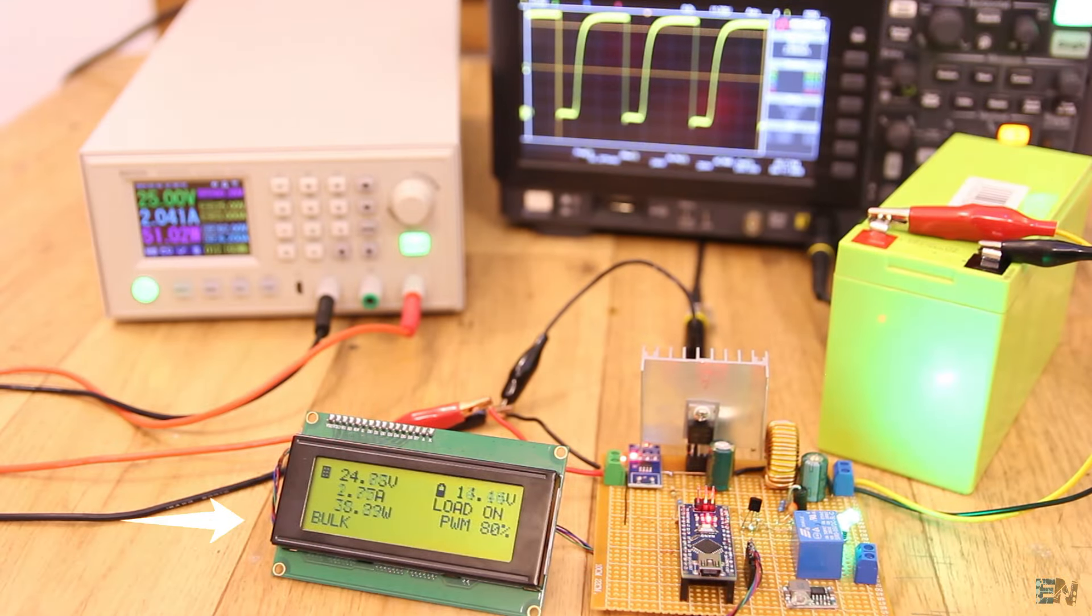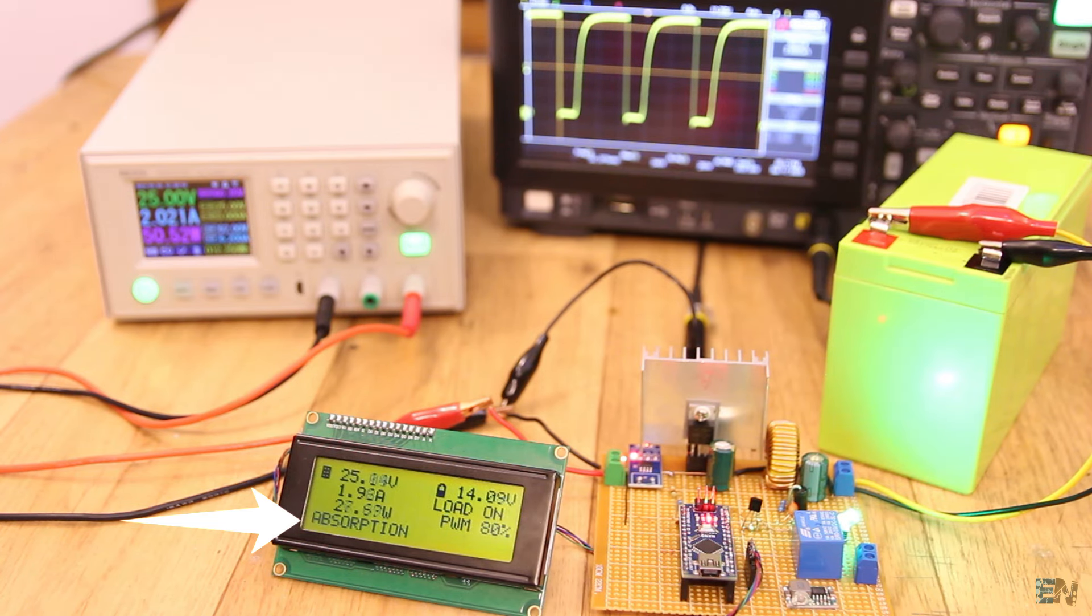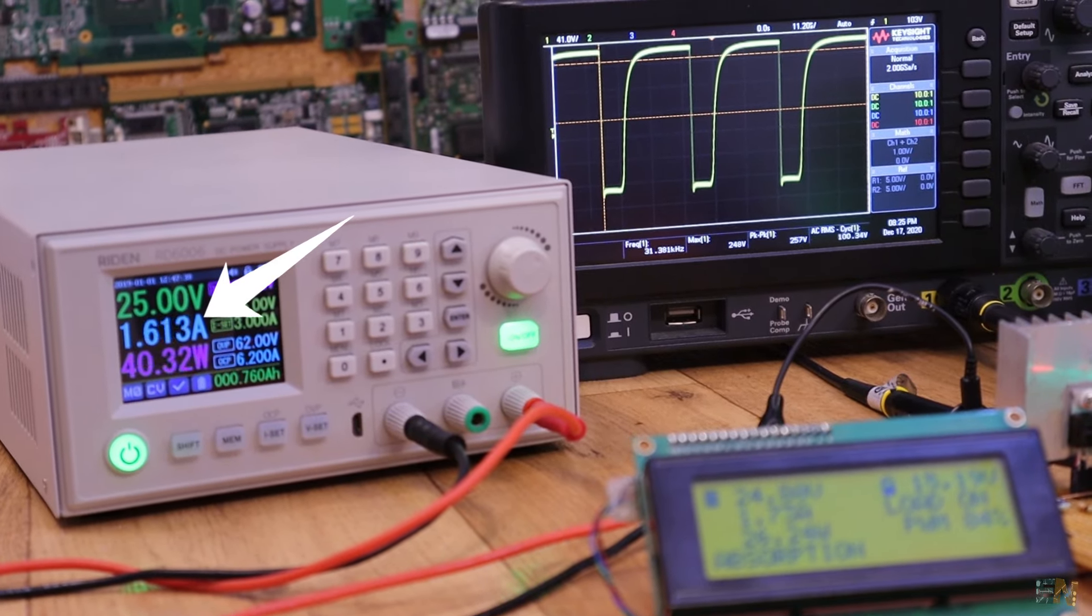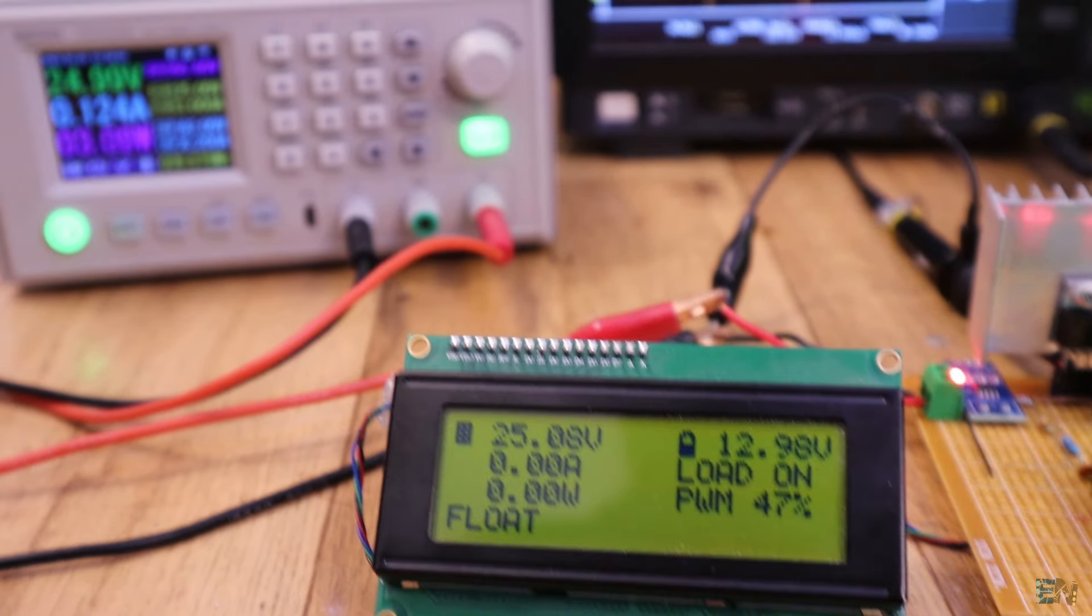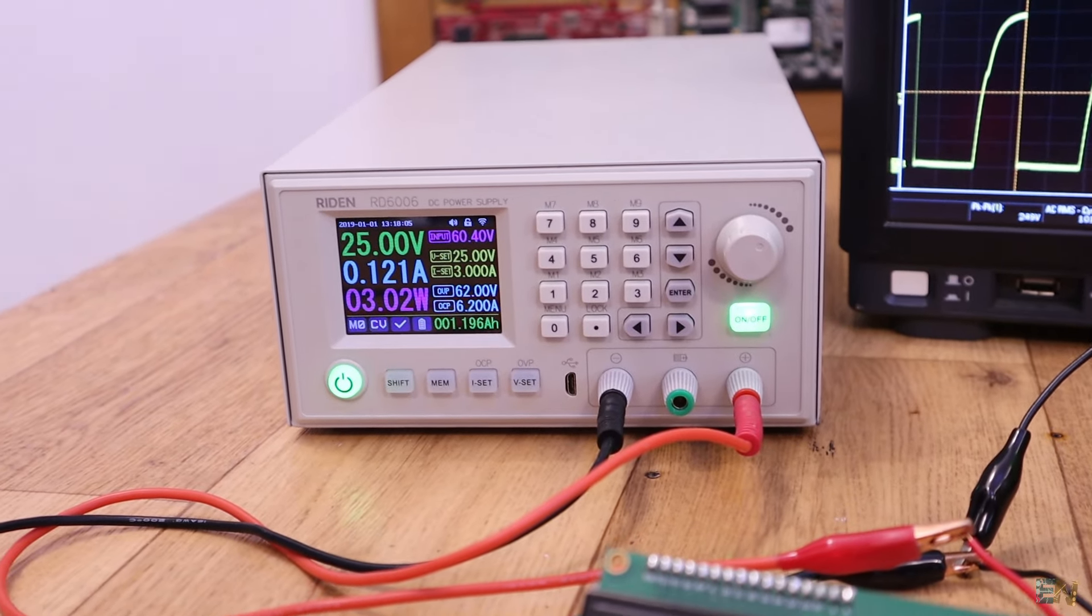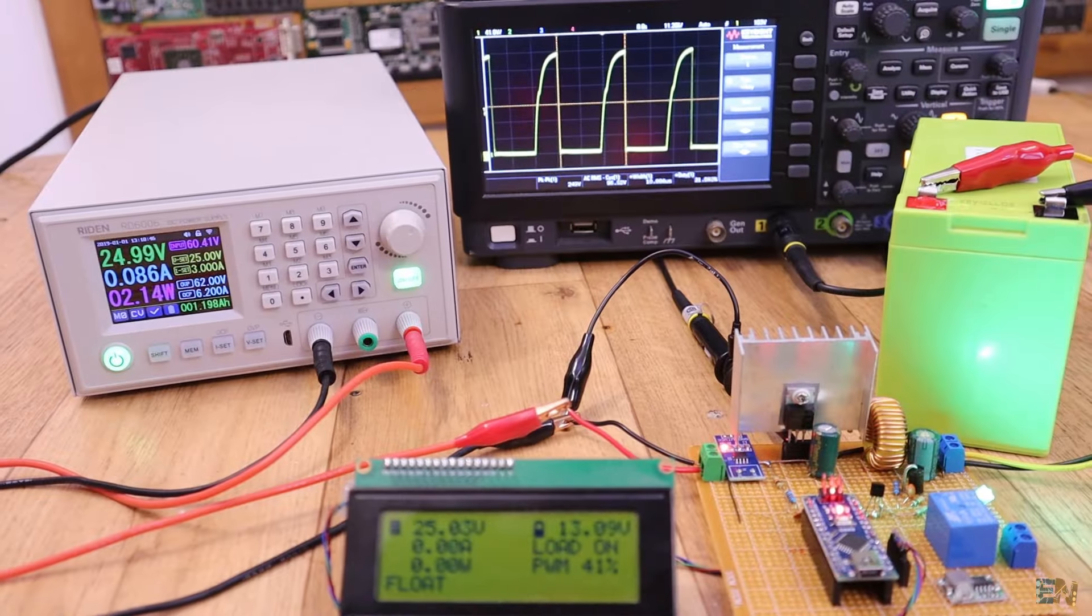But after a while, the mode changes to absorption. Now the voltage is constant at around 14V but the current is getting lower and lower. When the current is low enough, we enter the float mode. Here we keep a constant voltage of around 13V and a very low current and like that we keep the battery charge indefinitely.